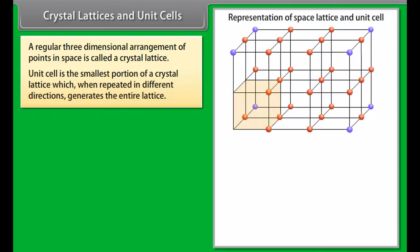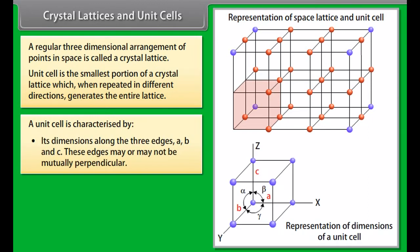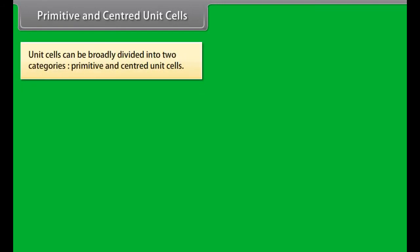Ions are the constituent particles of ionic solids, formed by three-dimensional arrangements of cations and anions bound by strong Coulombic electrostatic forces. These are hard and brittle in nature with high melting and boiling points. They are electrical insulators in the solid state but conduct electricity in molten state or when dissolved in water.